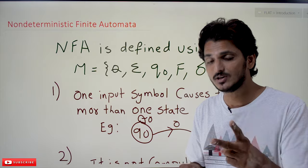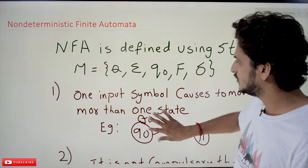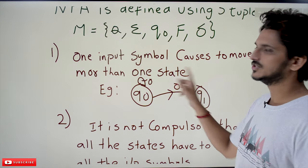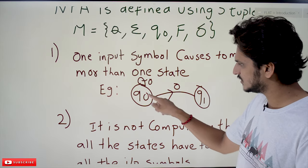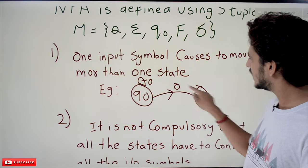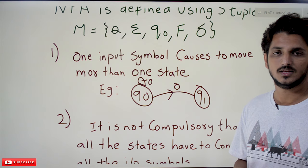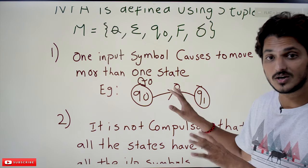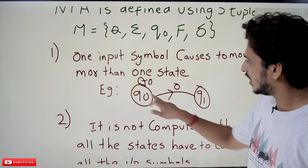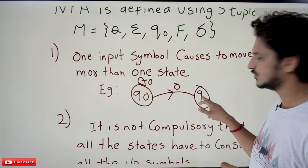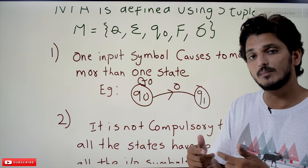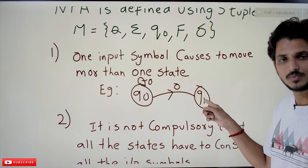NFA is also represented using these 5-tuples and we have some conditions on NFA. The same way DFA has two conditions, NFA also has two conditions. The first condition: one input symbol can cause a move to more than one state. For example, on applying input symbol 0 on Q0, we are moving to both Q0 and Q1. This flexibility exists in NFA but not in DFA — in DFA you move to only one state.